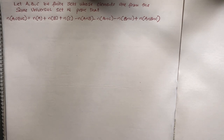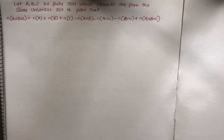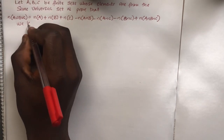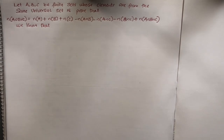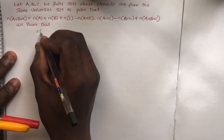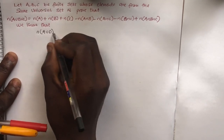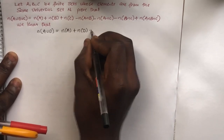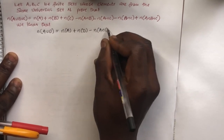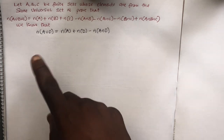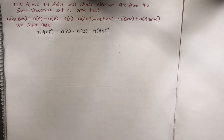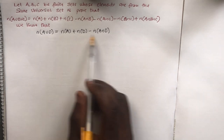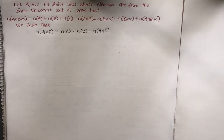Before I proceed on proving this, if you haven't watched my video on how to prove the formula for two sets, kindly pause this video and go watch it now. Because from there we know that the cardinality of A union D equals cardinality of A plus cardinality of D minus cardinality of A intersection D. From that two-set proof, we know this result.